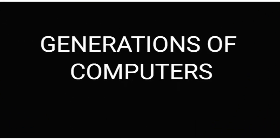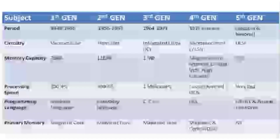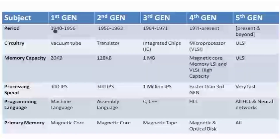Hello and welcome. Today's topic is generations of computers, in which we will understand each generation in a very brief manner. So let's get started. There are five generations: generation one, two, three, four, and five.